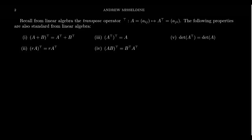If we recall from linear algebra the so-called transposition operator, or the transpose map, it's typically denoted by some type of capital T, sometimes lowercase t, or some symbol that resembles a T. If you have a matrix A, A transpose means you're going to switch all of the rows to columns and columns to rows. So the element A_ij in the ith row, jth column will move to the jth row, ith column.